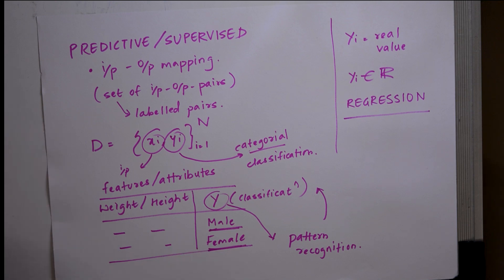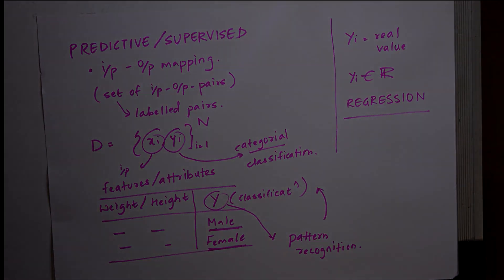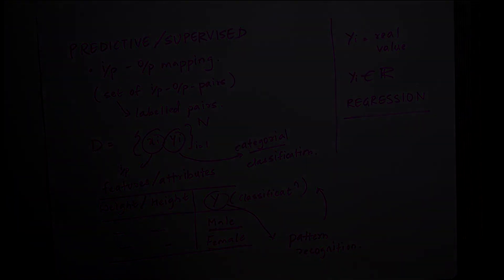So what we have learned till now is there are three types of ML learning. First is predictive, that is supervised. Second is descriptive, that is unsupervised. And third is reinforcement. In predictive or supervised, it is just like input-output mapping. So you get the input and you check for the output.